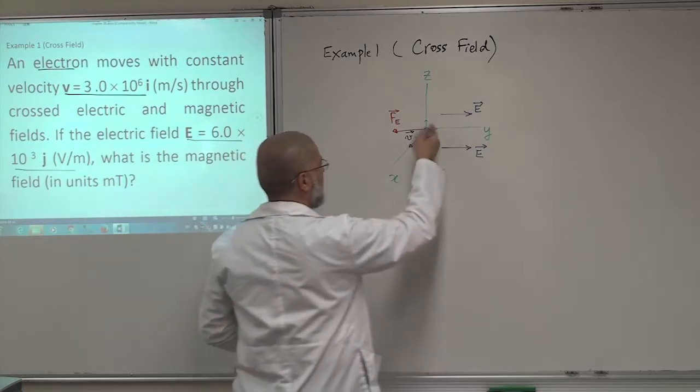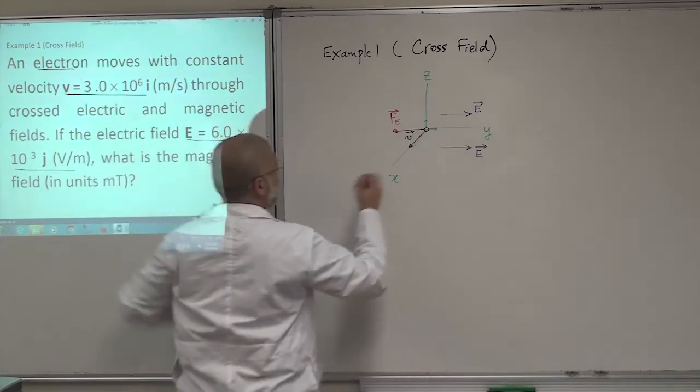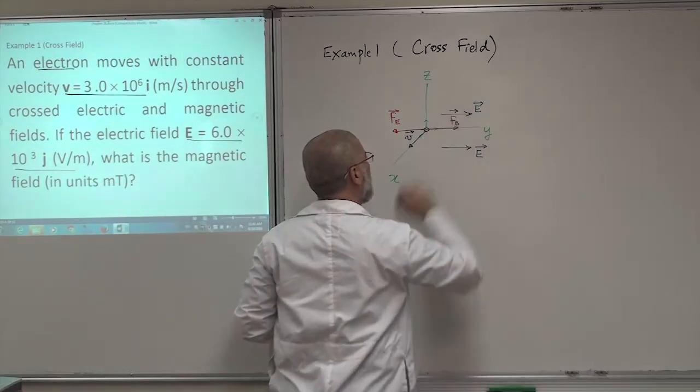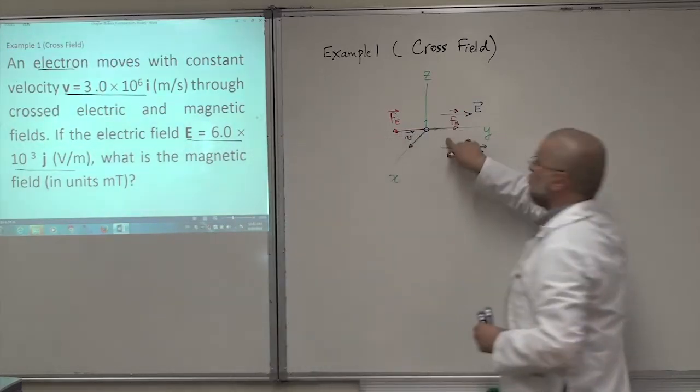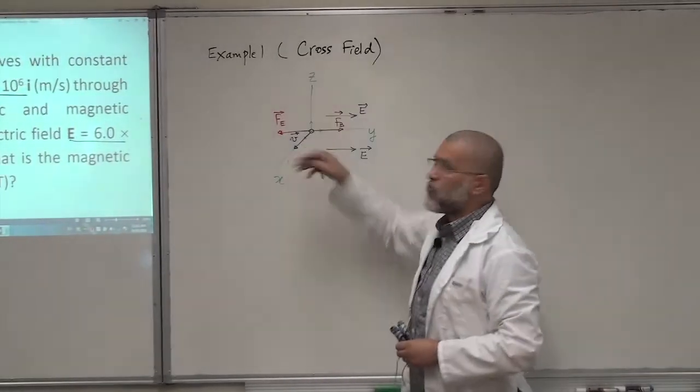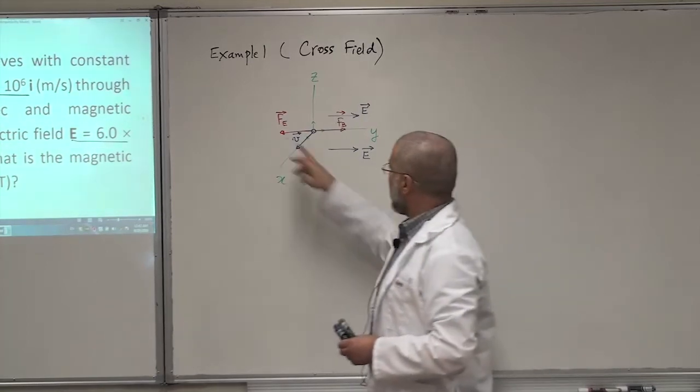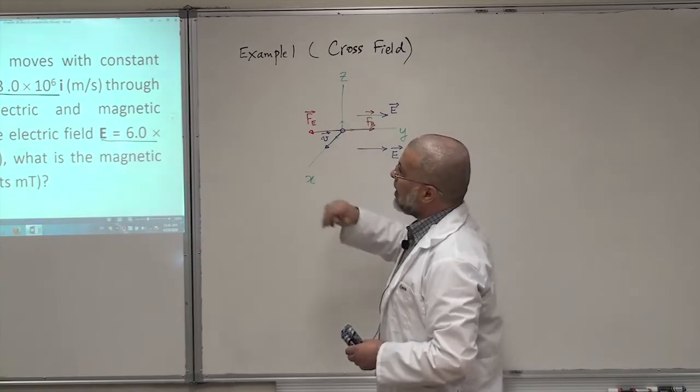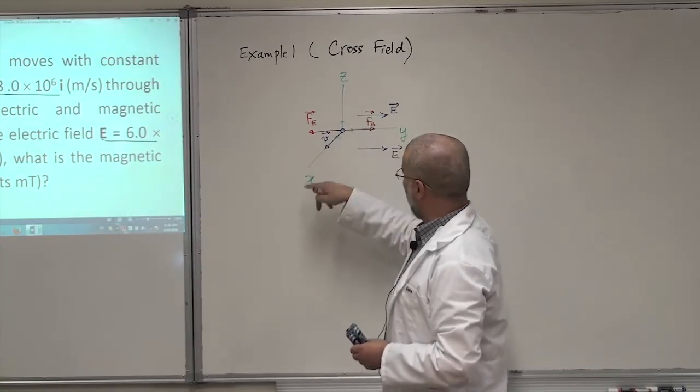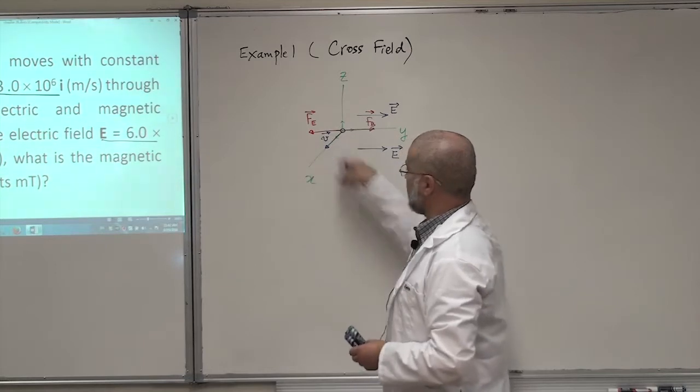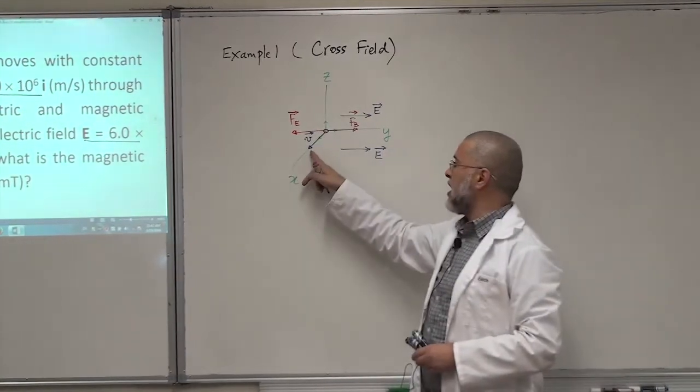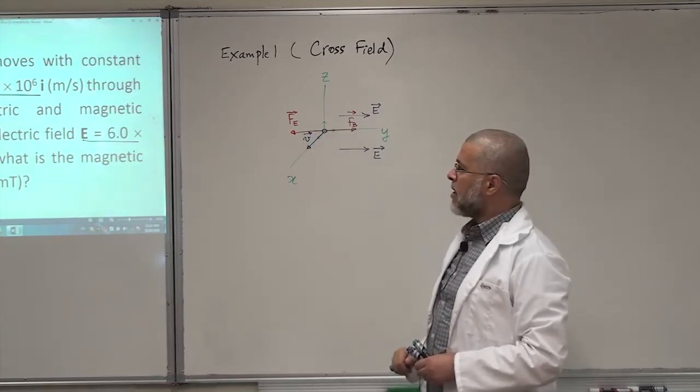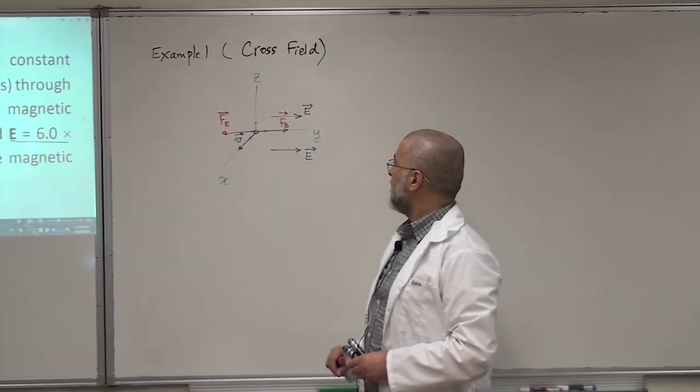Since this electron is moving at constant speed, there should be another force here in this direction, which is the magnetic force. That's important. And the two forces should cancel each other so that the electron will move at constant speed. Otherwise, if one of the forces is larger than the other one, the electron will not move along the X axis. It will move in a curved path or in a plane. But now it's moving in this direction. It means the two forces cancel each other.